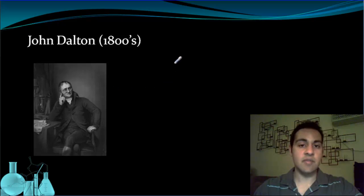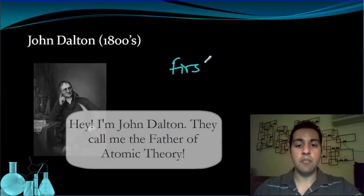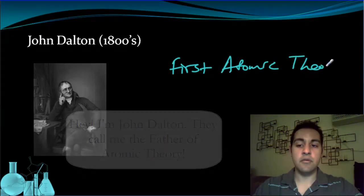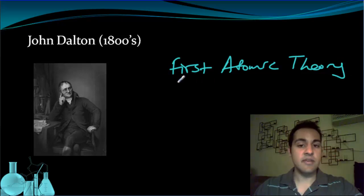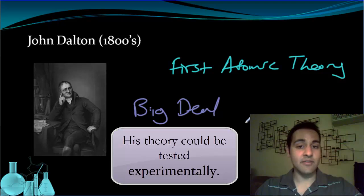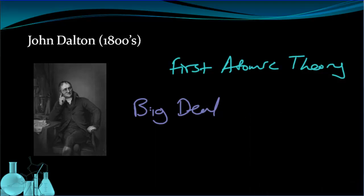So in the 1800s, John Dalton came up with the first modern atomic theory. And he actually based his ideas on actual evidence that he had gathered in experiments that he conducted. So the big deal with John Dalton having the first atomic theory is that it could be tested experimentally. Dalton's atomic theory consisted of five parts, and let's take a look at what those are.